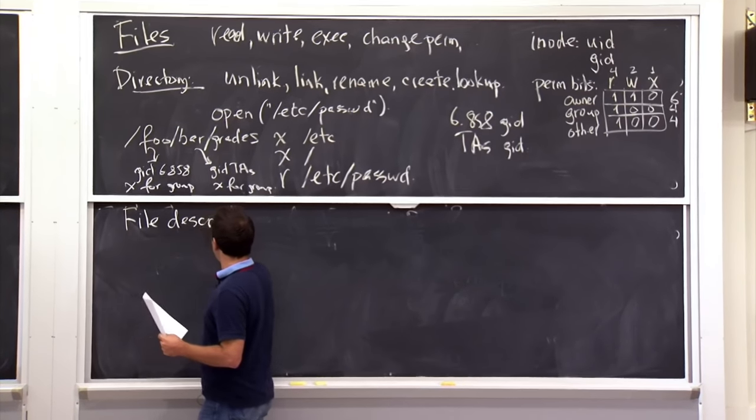Regarding changing file ownership: different Unix implementations have slightly different checks, but the general rule is only root can change the owner of a file. You don't want to create files owned by someone else, and you don't want to take over other people's files. If you're a non-zero UID, you're stuck — you can't change the owner of any file. These are just the basic Unix primitives that show up in pretty much every Unix-like OS: Mac OS X, Linux, FreeBSD, Solaris, etc.